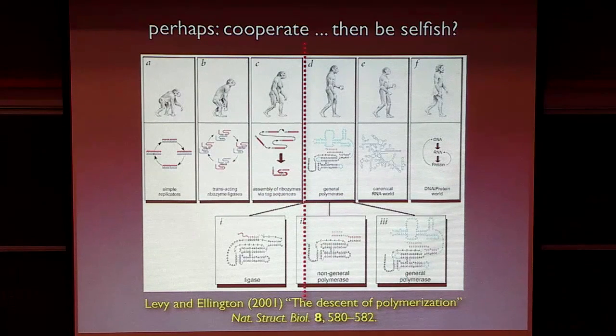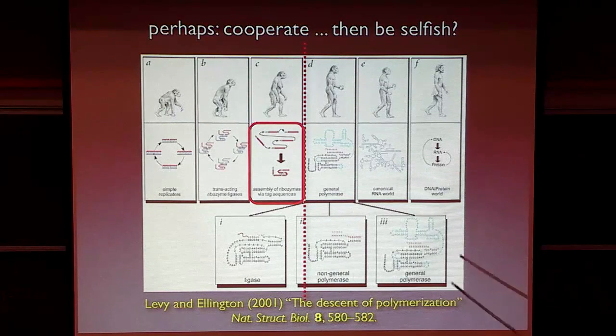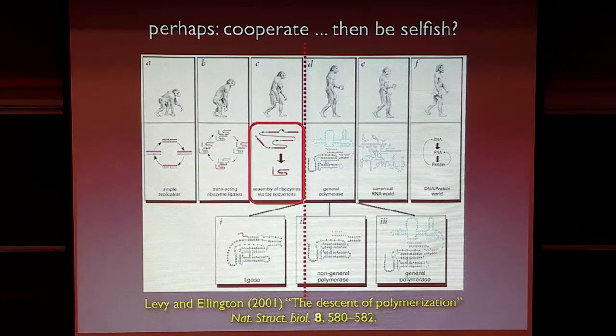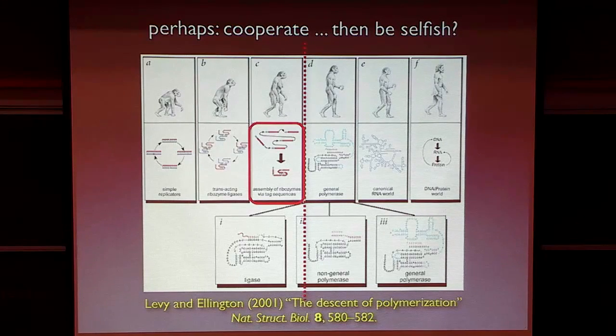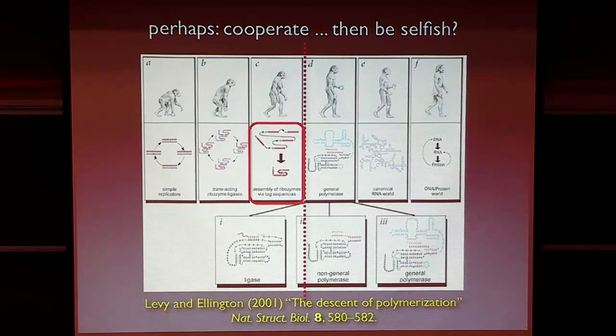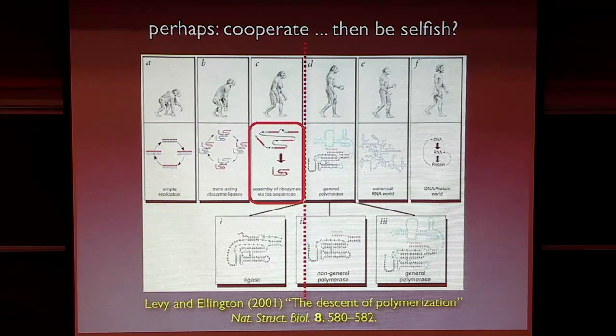And that ancestry was rooted in simpler replication systems. And so I sort of took the step immediately prior to the replicase ribozyme as something that I would like to try to emulate in the laboratory. And he called it an assembly of ribozymes via tag sequences. And as we go along today, I think you will see that the system I'll show you has a lot in common with that particular stage of life.